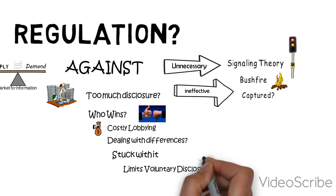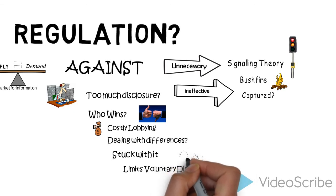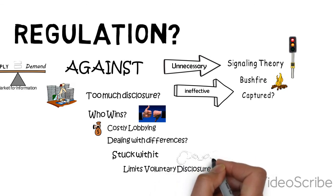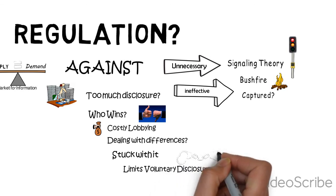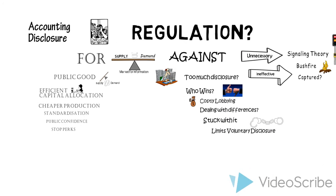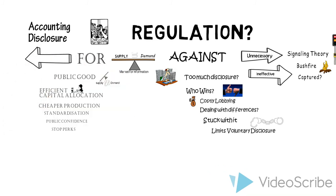If you believe signaling theory, then it means that managers are better left to decide the most appropriate level and form of accounting disclosure. For example, accounting regulation stops organizations from including internally generated intangibles — in other words, if we just let them do it the way they want, they may provide more relevant information. To regulate or not to regulate was the question in this second installment for this topic.